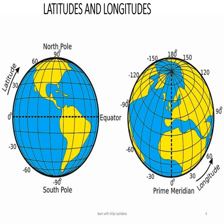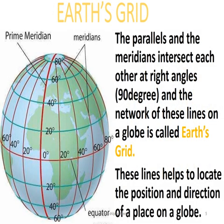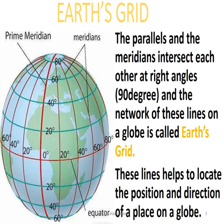All meridians run from the North Pole to the South Pole, meaning they meet at the poles. They come closer gradually from the equator toward the poles, and finally all meet together at the poles. Latitudes and longitudes together form a mesh or grid. The parallels and meridians intersect each other at right angles — that is, 90 degrees — and this network of lines on the globe is called Earth's grid, helping us locate the position and direction of any place.